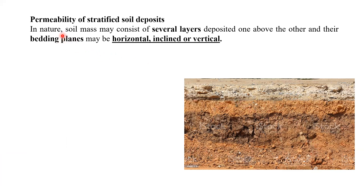So what it says is that in nature, soil may consist of several layers deposited one above the other, and their bedding planes may be horizontal, inclined, or vertical. So these bedding plane layers may be inclined, vertical, or horizontal.